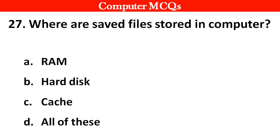Next question. Where are saved files stored in a computer? Options A: RAM, B: Hard disk, C: Cache, D: All of these. Right answer is option B: Hard disk.